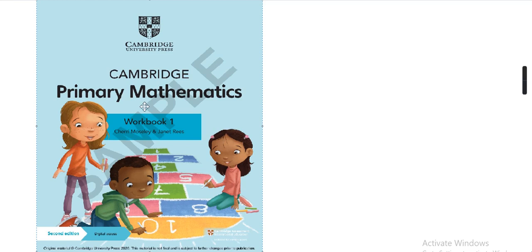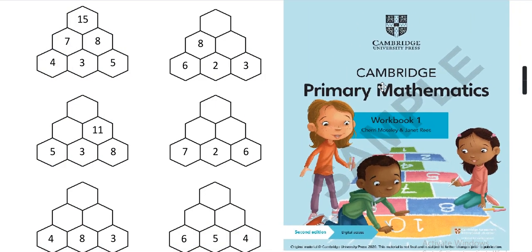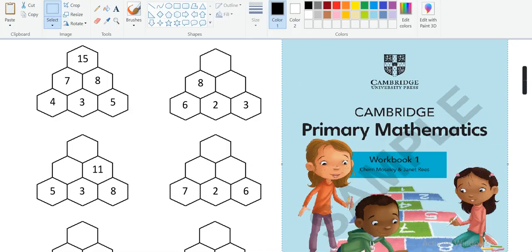Bismillahirrahmanirrahim and Assalamu Alaikum. This is a book of Cambridge Primary Mathematics Grade 1, and there is a topic called number walls. This topic is very difficult for parents and students, so today I will explain this topic. This is how the number walls look like — let me get a pen to explain it.